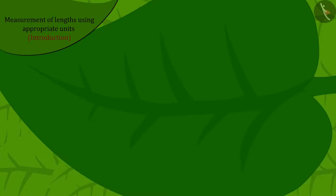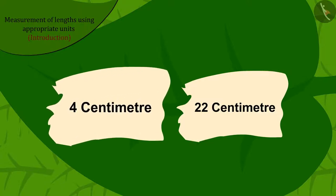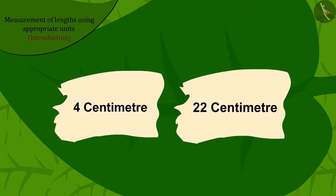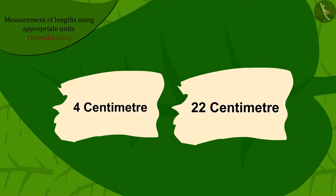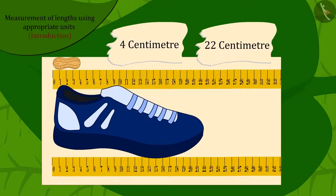Now, Chanda found these two pieces of paper on which 4 cm and 22 cm were written. Can you match the length of the remaining two objects with their correct lengths? You can find the answer by pausing the video.